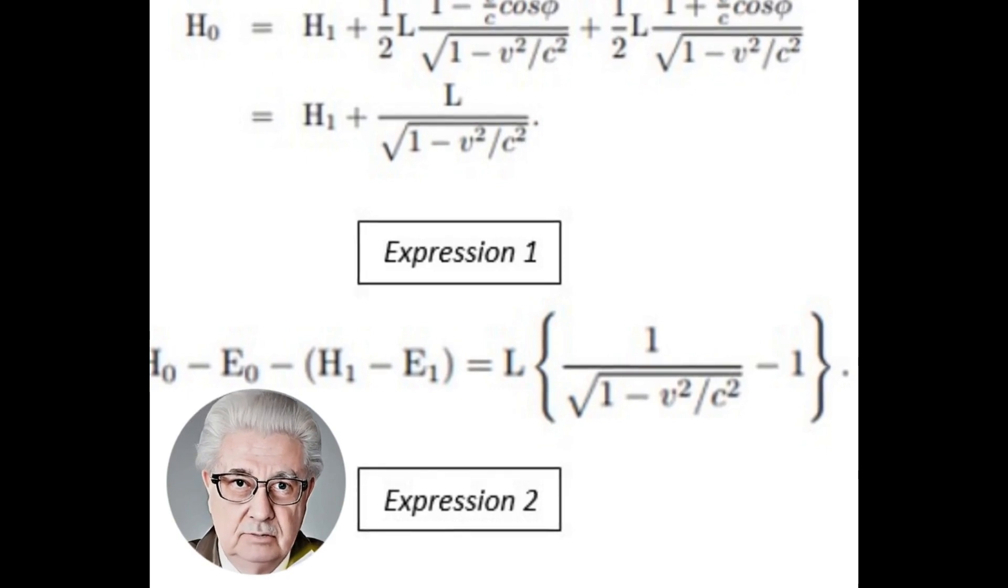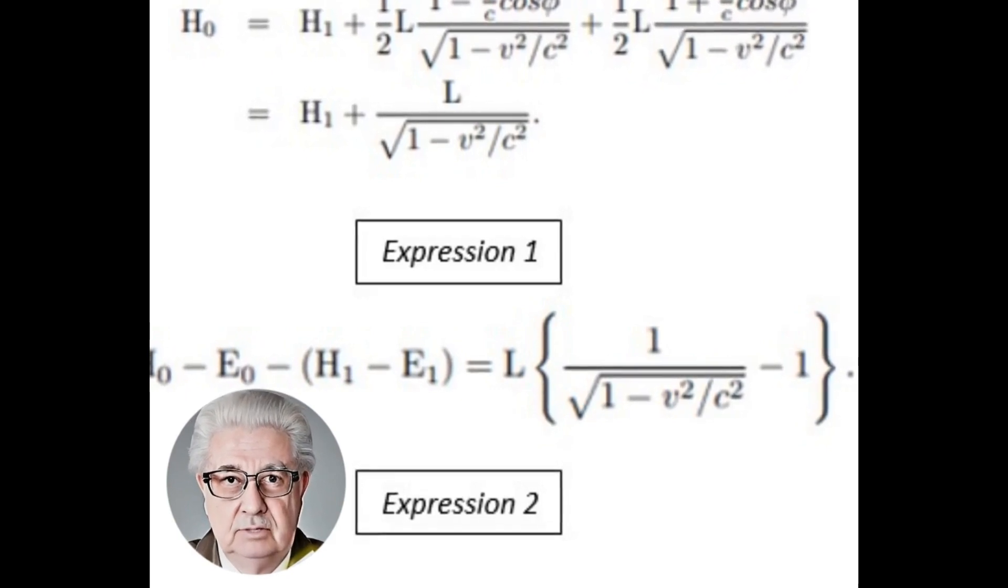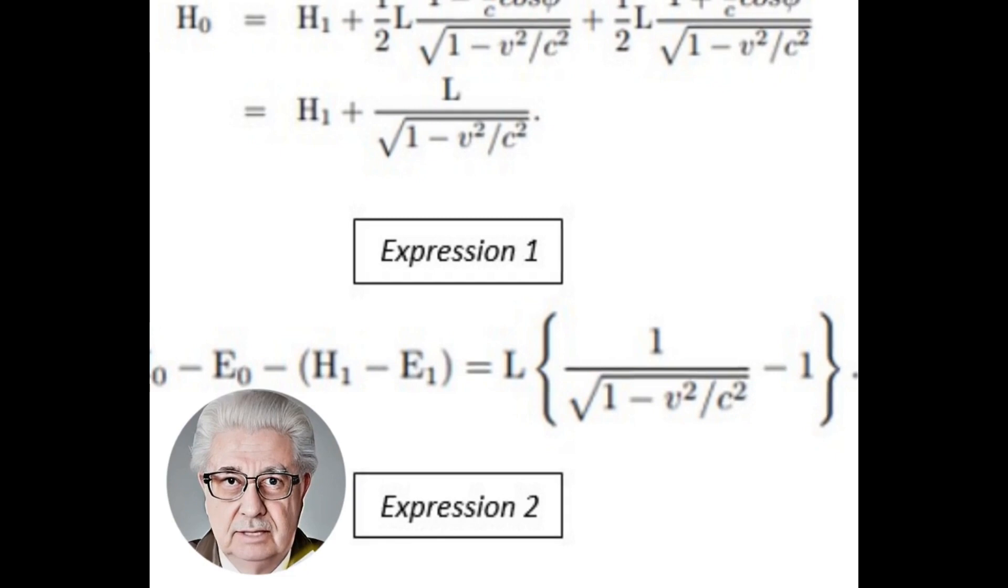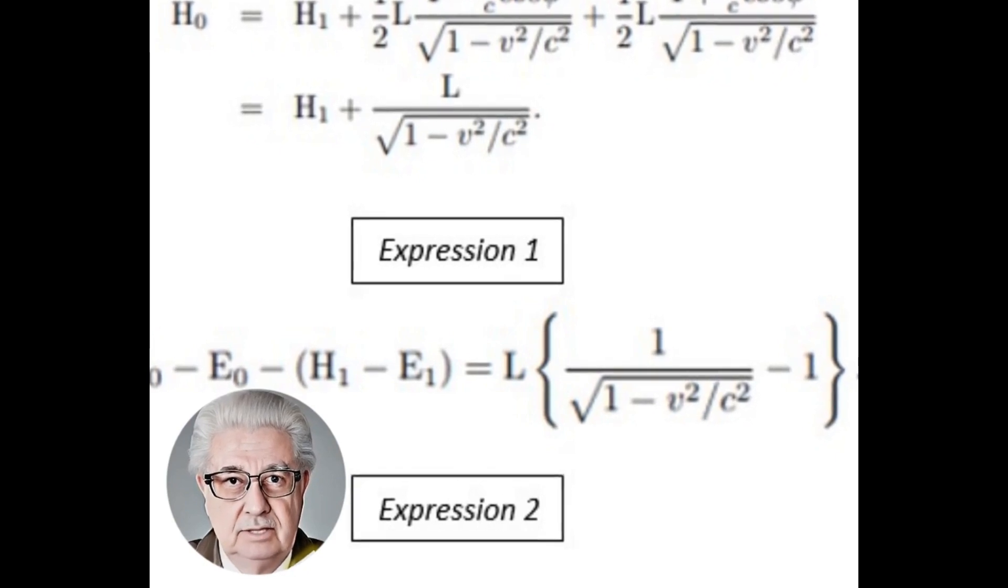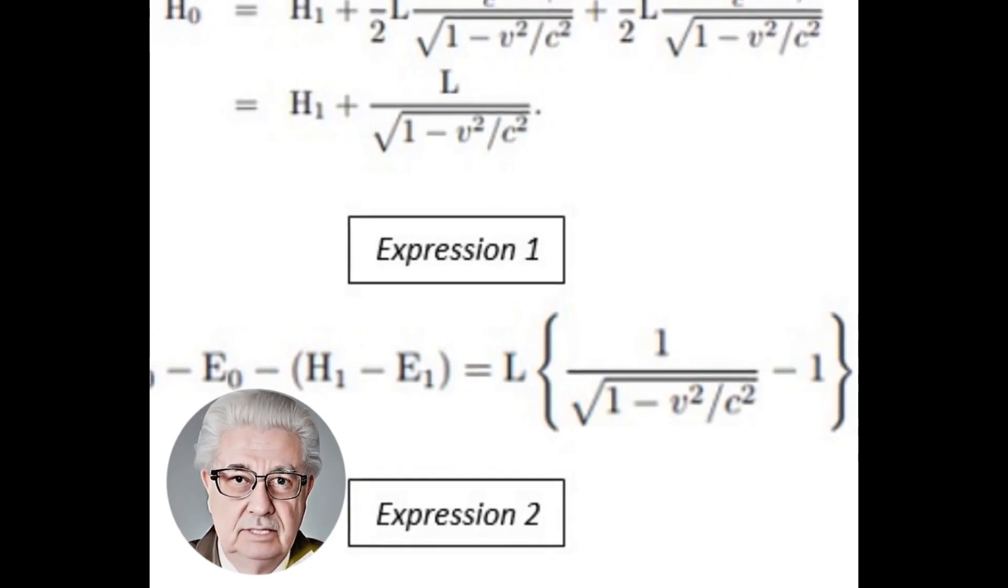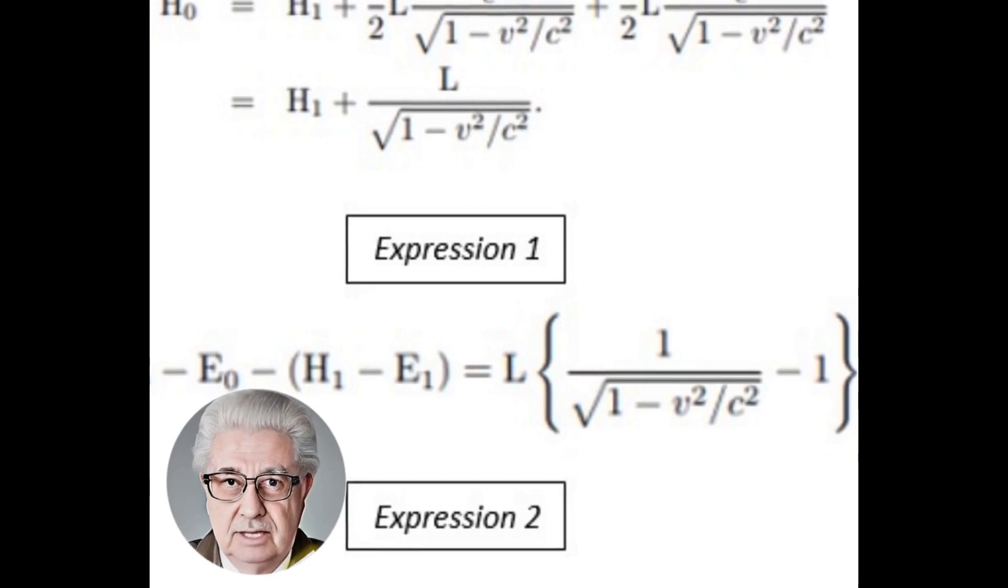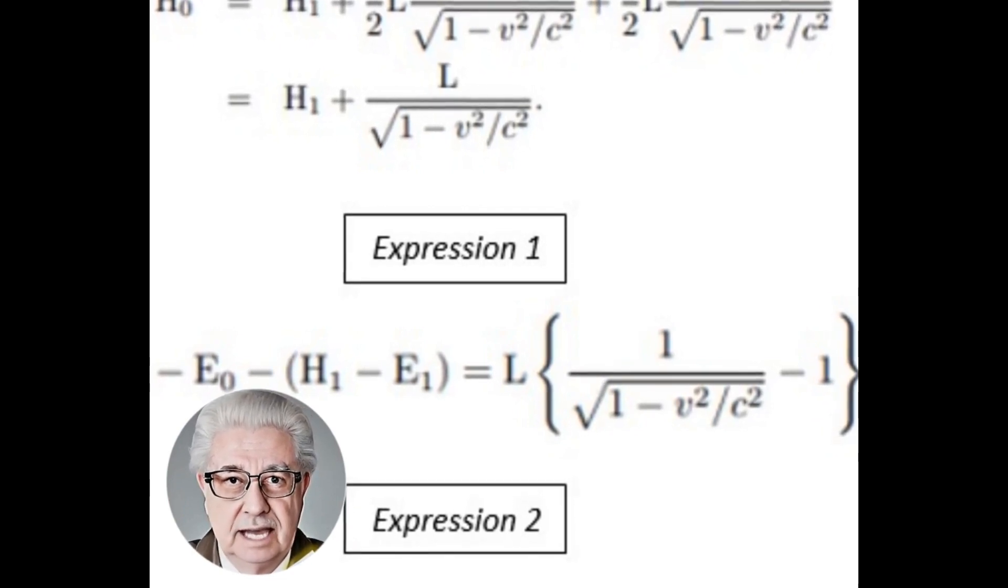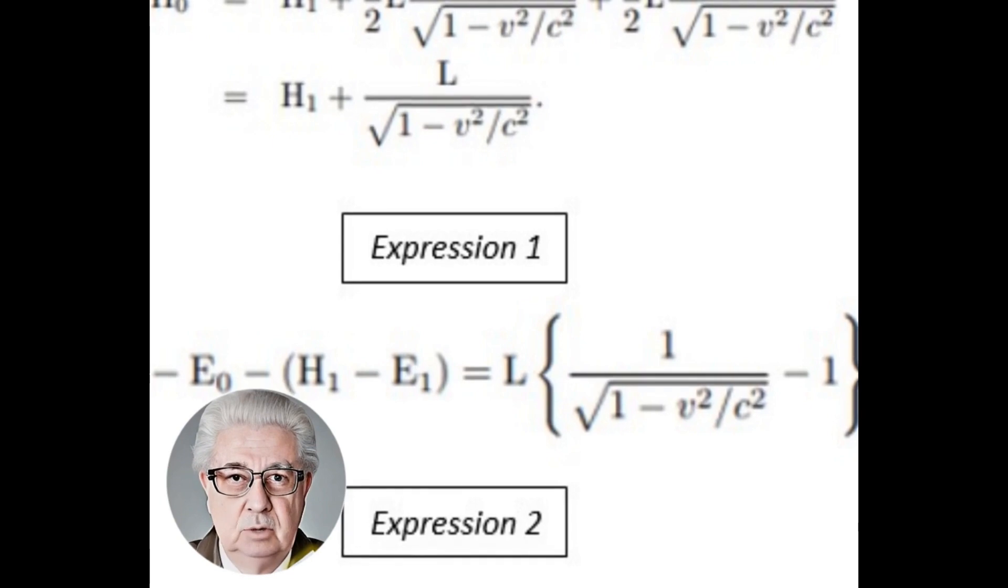Therefore, it is clear that the difference H minus E can be different from the kinetic energy K of the body with respect to the other system in relative motion, system in motion, only by an additive constant C, which depends on the choice of the arbitrary additive constant of the energies H and E. Please see expression 3.